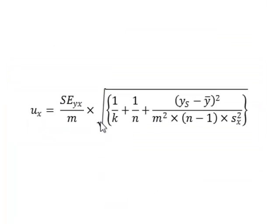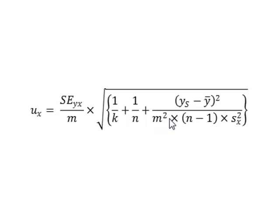Returning to the equation, we can see that we have already derived the standard error of regression SE, and the slope of the best fit straight line m. If we are looking for the intercept in the middle section of the calibration line, we do not need the last term within the square root. However, for intercepts further away from the middle of the calibration line, we also need to calculate the mean of the y values in the calibration and the variance in the x values, and we can do this easily in both Minitab and SPSS.